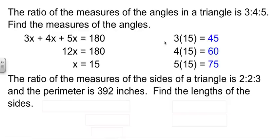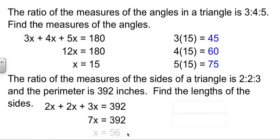180 applies to angles. Here we're talking about sides. So 180 doesn't come into play. The perimeter, however, does. So 2x plus 2x plus 3x equals 392. Collect up and divide, and we find out that x is 56.